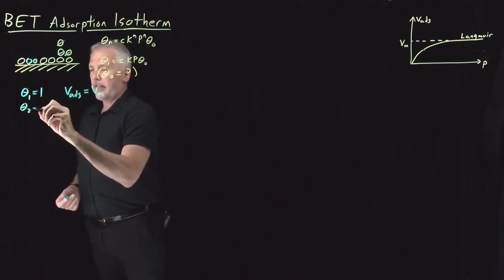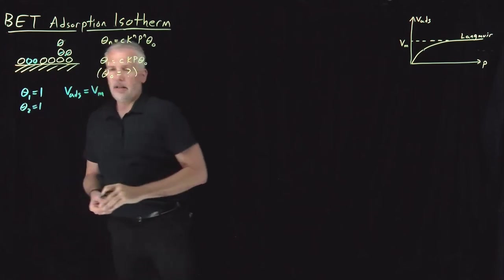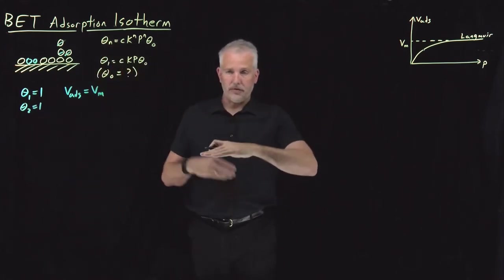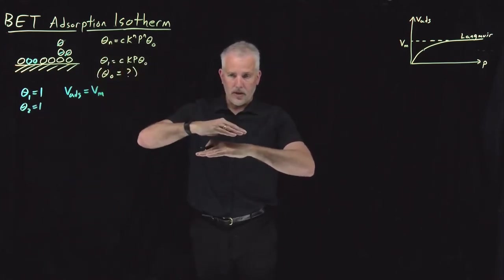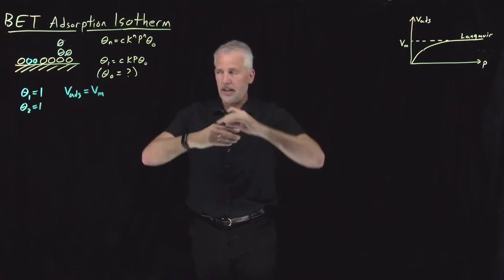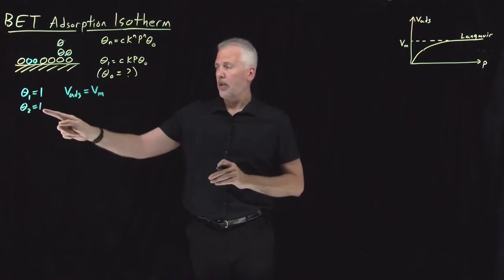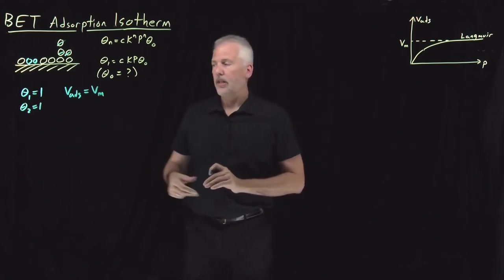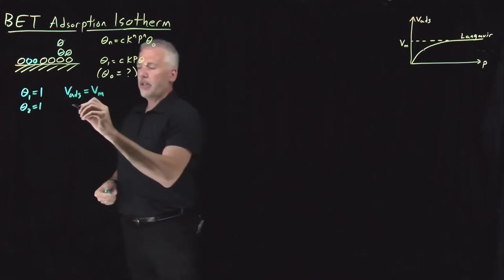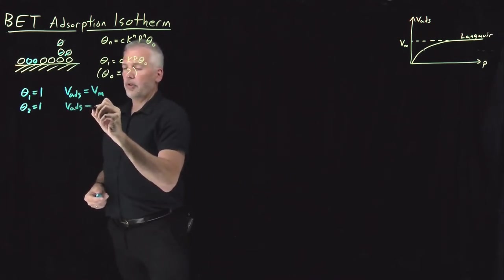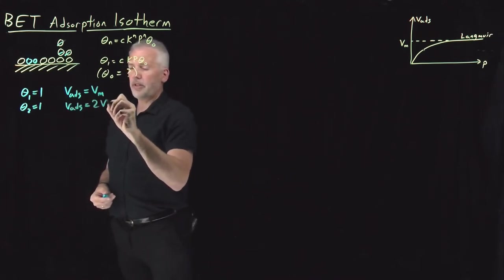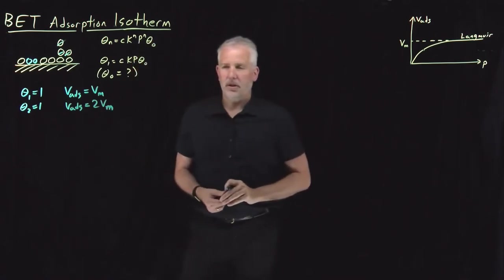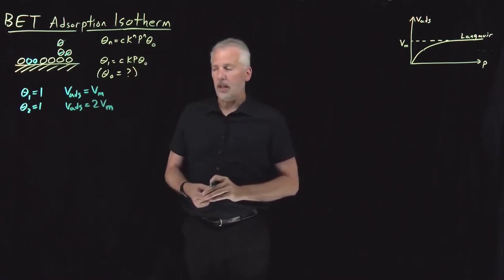On the other hand, if I've got a full bilayer of coverage — layer one adsorbed and a full second layer adsorbed, so 100% of the surface is covered by two molecules — then clearly the adsorbed volume would be twice what it would take to cover one monolayer.